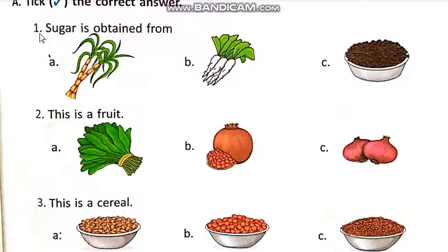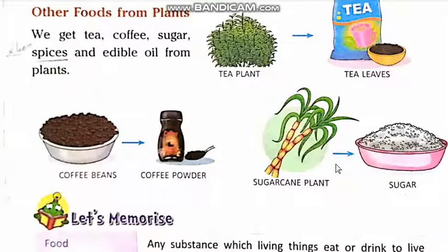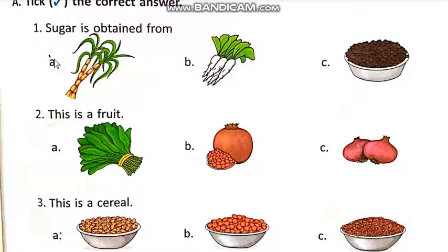Number one: Sugar is obtained from — sugar hasil hoti hai. Option A: Sugar cane. B: Radish. C: Coffee beans. Students, we read here that sugar is obtained from sugar cane plant. So the correct answer is option A, Sugar cane.